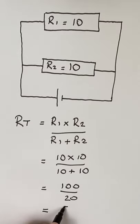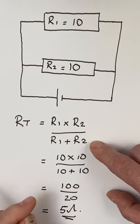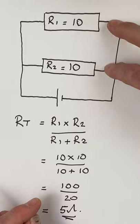This gives us a total resistance of 5 ohms. Product over sum - another way of working out the total resistance when there are two resistors connected in parallel.